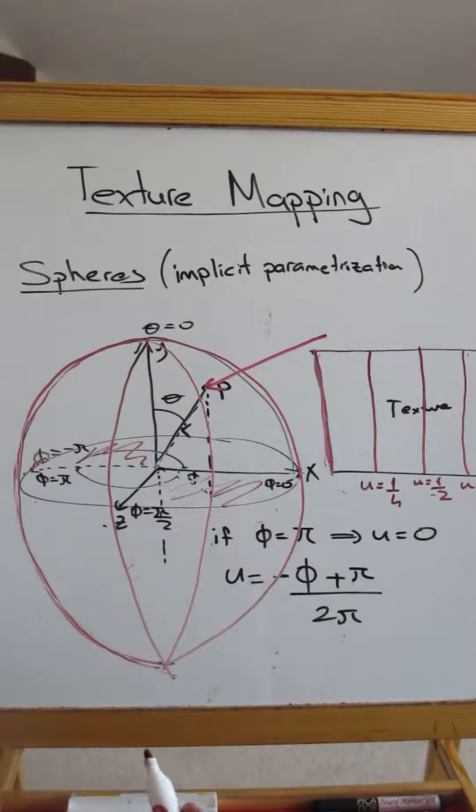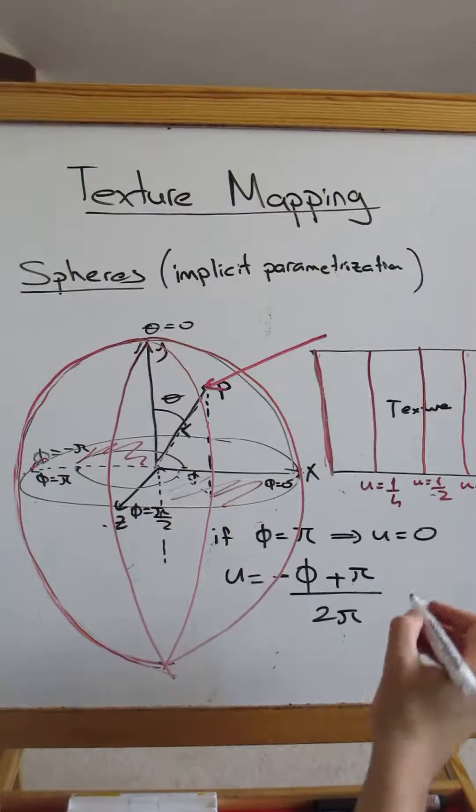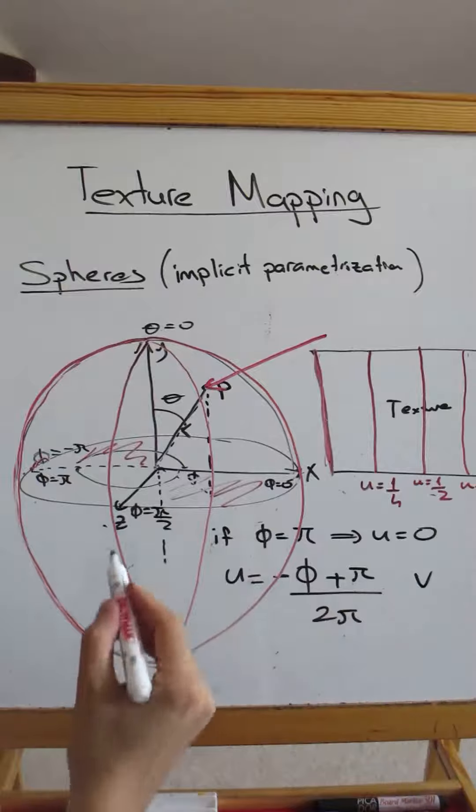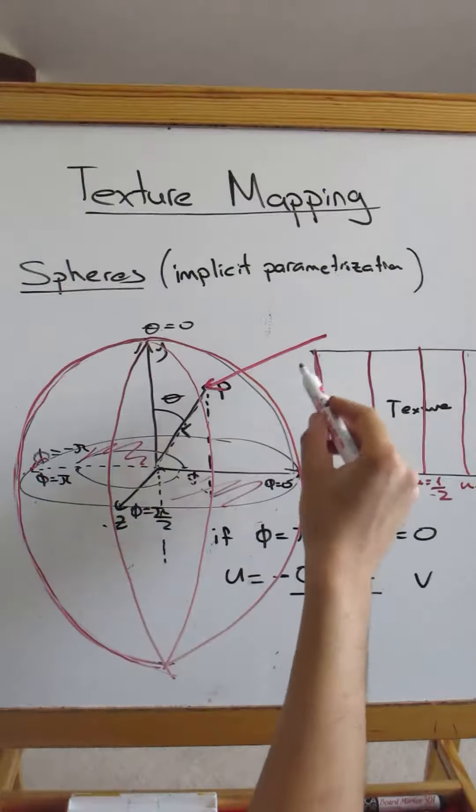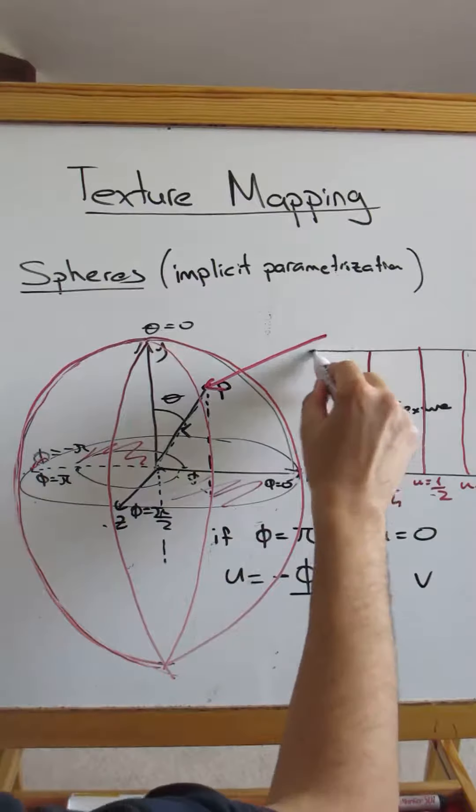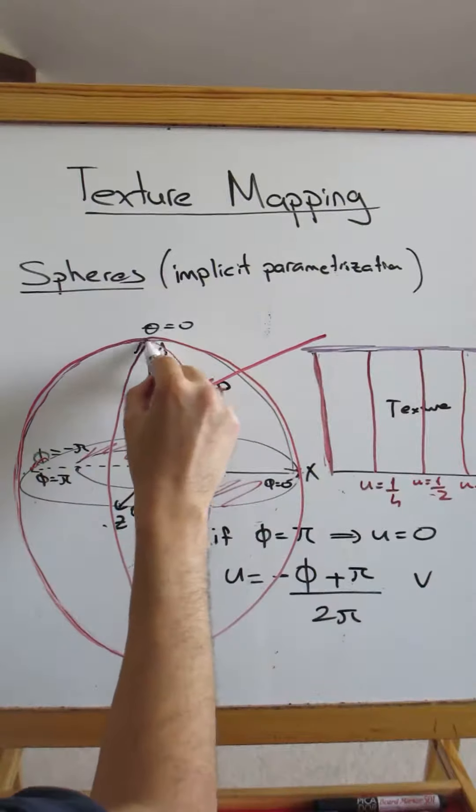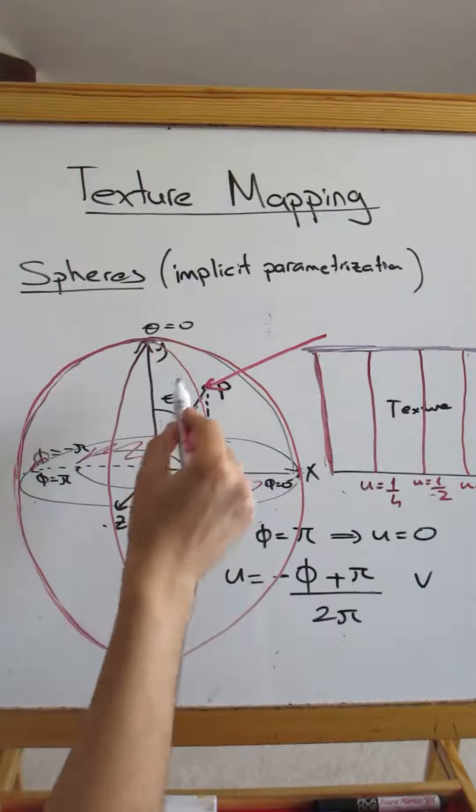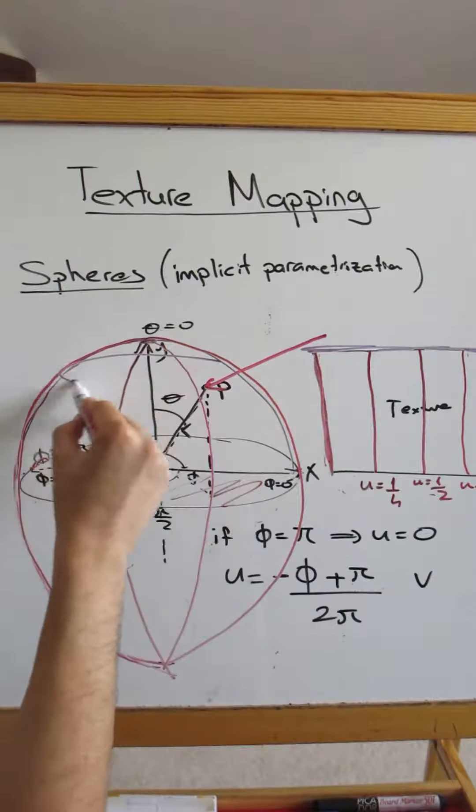Now for computing the other parameter V, we can say that we want this part of the texture, the top row of the texture, to map to here. And as you go down, let's say this part